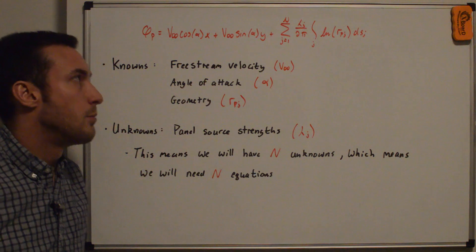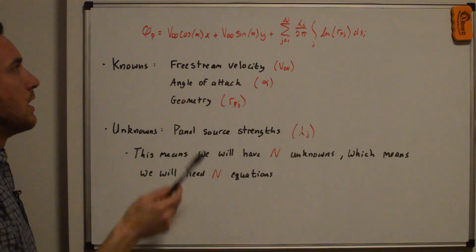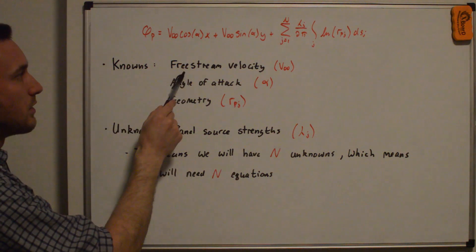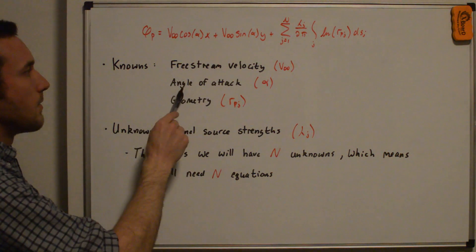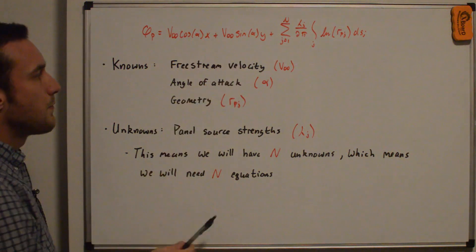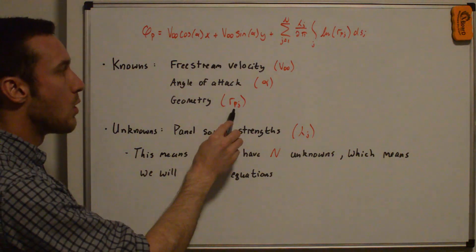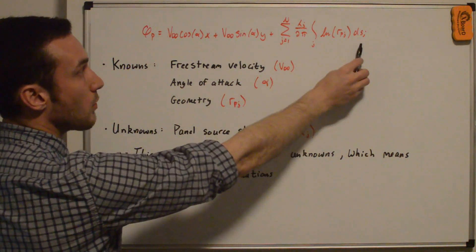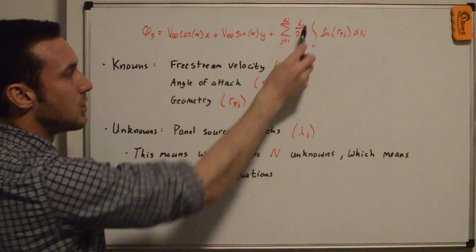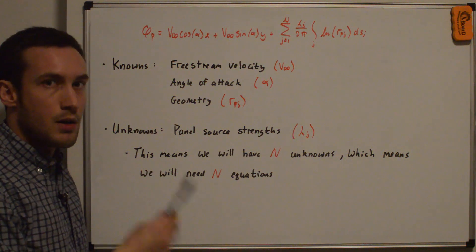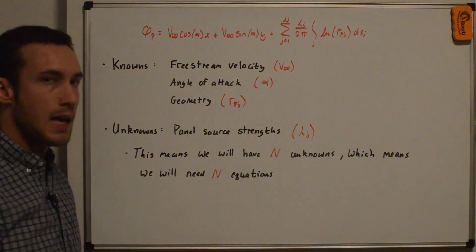I've rewritten the velocity potential equation. The knowns are: the free stream velocity V_infinity from the uniform flow term, the angle of attack alpha also from the uniform flow, and the geometry — we set the airfoil geometry so we know r_pj inside the integral. Everything inside the integral is known. The only unknowns are the panel source strengths lambda_j, meaning we have N unknowns — one source strength per panel — and therefore we need N equations.